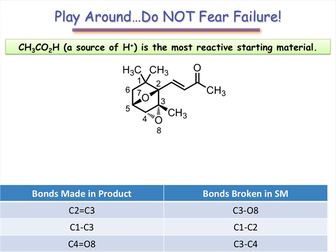Because the enone and O7 are untouched, it makes the most sense to protonate the remaining basic position, the epoxide oxygen. Notice that this also sets up epoxide opening through cleavage of the C3O8 bond, fulfilling one of the requirements of our bonds table.